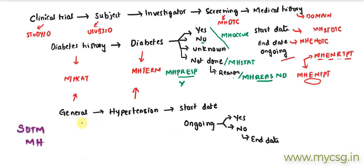For general medical history, the reported term such as hypertension also goes into MHTERM. The start date variable is MHSTDTC. If the condition is ongoing, we use the pair of variables MHENRTPT and MHENTPT. If it has ended, we use MHENDTC. These are some of the important variables in the SDTM MH domain.